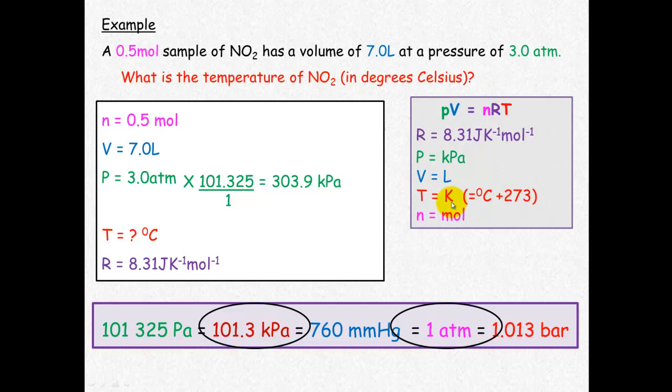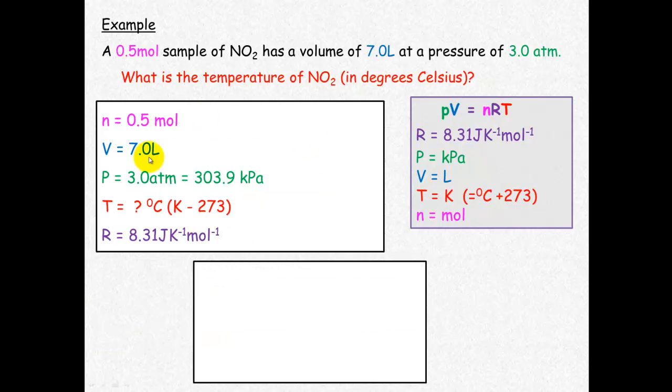Temperature needs to be in Kelvin, so we must remember to convert this in our final answer. Now that we've got all the information, we can plug it straight into PV equals nRT.